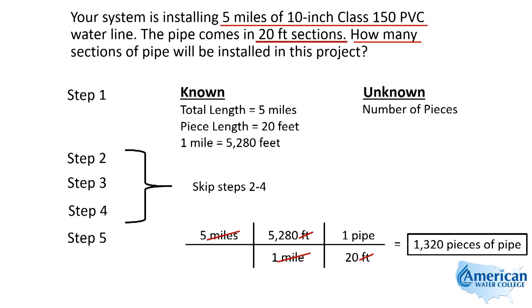When we do that math — five times 5,280 divided by 20 — we get 1,320 pieces of pipe.